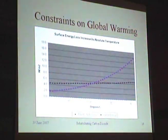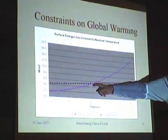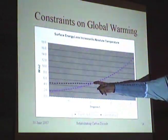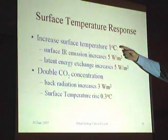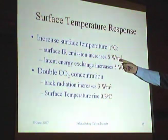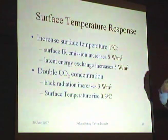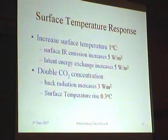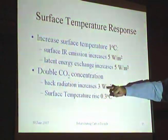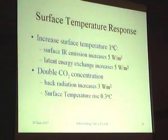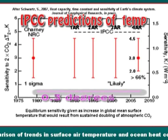If we increase the surface temperature by one degree, we increase the infrared radiation and the latent energy each by about 5 watts per square metre. So to sustain a one degree increase in surface temperature, we need 10 watts per square metre increase in back radiation. But doubling CO2 only gives us 3 watts per square metre. So 3 watts per square metre will only increase the surface temperature by about 0.3 degrees centigrade.